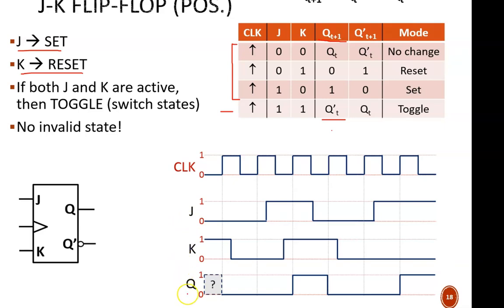Without being given the starting value, I actually don't know what Q equals before the first positive edge, so I have a question mark there. But then at that first positive edge, J equals 0 and K equals 1, which is the instruction for reset mode. Therefore, Q is forced to be a 0.